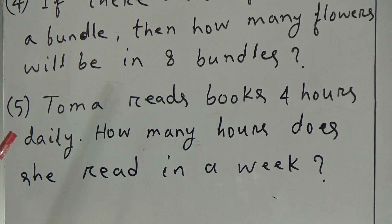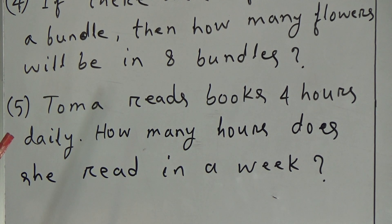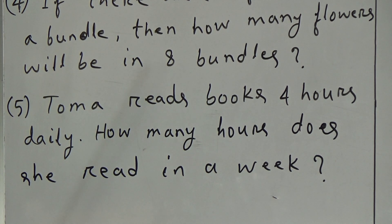In 1 day she reads 4 hours. So in 7 days she reads 7 times 4 hours. That means we have to multiply 4 by 7.